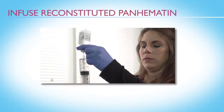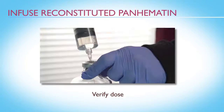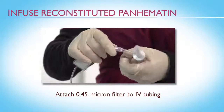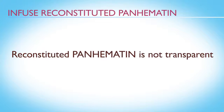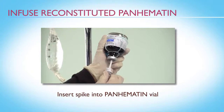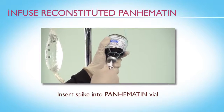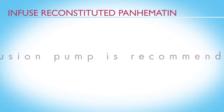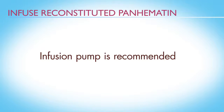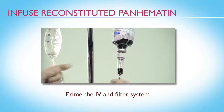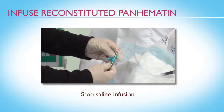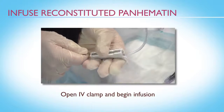Now you're ready for the immediate infusion of Panhematin. After verifying the dose, attach a sterile 0.45 micron or smaller filter to the vented IV tubing. Reconstituted Panhematin is not transparent, so the filter will catch any undissolved particles. If the IV tubing isn't vented, attach a vented spike adapter and insert the spike into the evacuated Panhematin vial. An infusion pump is recommended to ensure accuracy of dosing and administration time. Prime the IV and filter system with Panhematin, attach the IV line to the Y site on the primary infusion line, stop the saline infusion, then open the clamp on the IV tubing and begin the infusion.